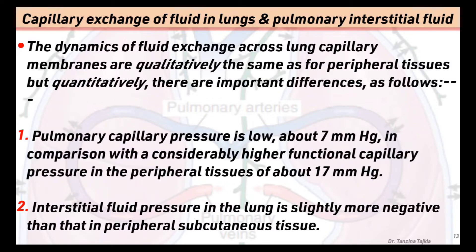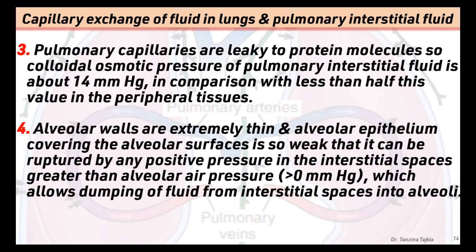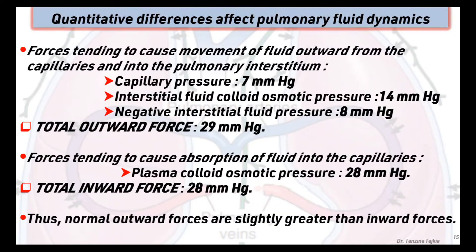Second, interstitial fluid pressure in the lung is slightly more negative than that of peripheral subcutaneous tissues. Fourth, pulmonary capillaries are leaky to protein molecules, so the colloid osmotic pressure of pulmonary interstitial fluid is about 14 mmHg, compared to less than half this value in peripheral tissues. Alveolar walls are extremely thin, and the alveolar epithelium is so weak that it can be ruptured by any positive pressure in the interstitial space greater than alveolar air pressure, allowing dumping of fluid from interstitial space into the alveoli.